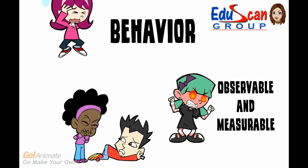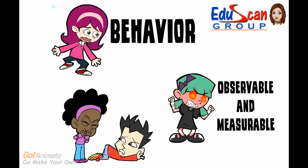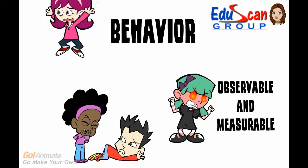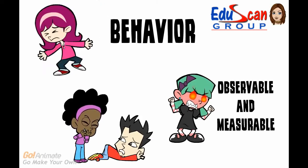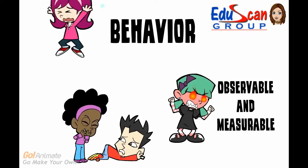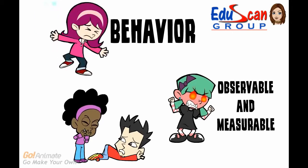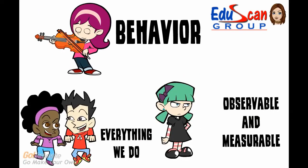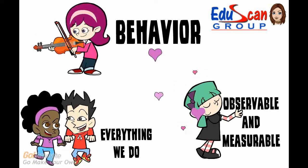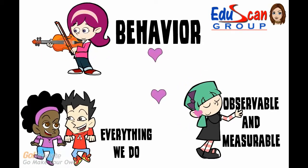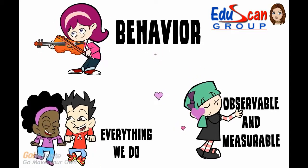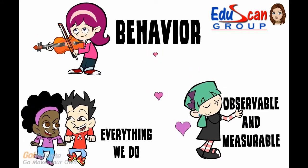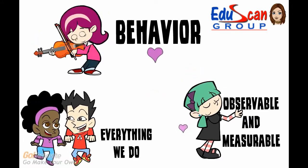The seventh dimension is behavior. Behavior must be observable and measurable in order for it to be changed — if we can see it, we can measure it, and we can change it. Behavior is not only crying, screaming, or kicking others; it can also be a desired behavior. We define behavior by describing what we can see, rather than an emotion.